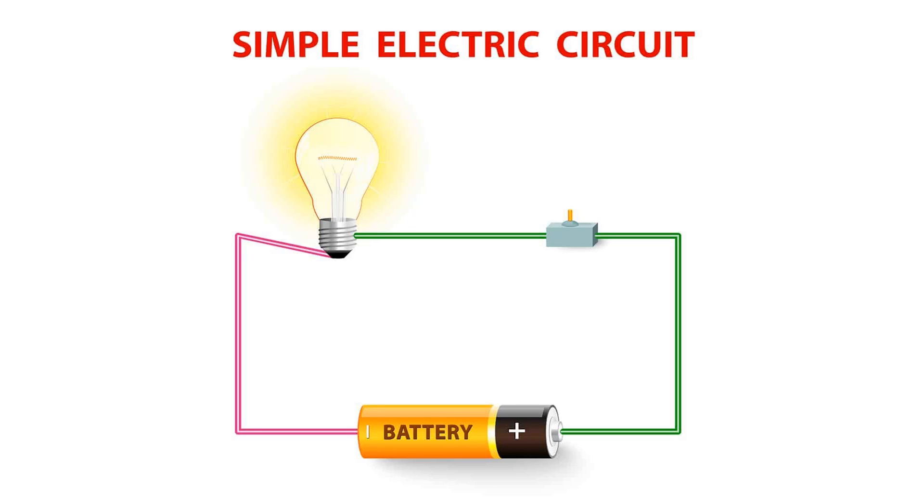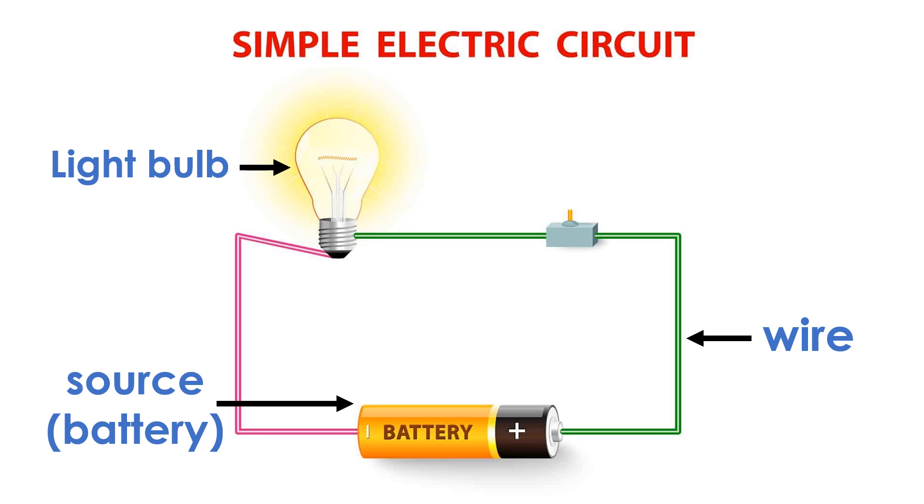Grade 5 learners, look at the illustration carefully. It shows an electrical circuit which has four parts: a source, light bulb, wires, and switch.